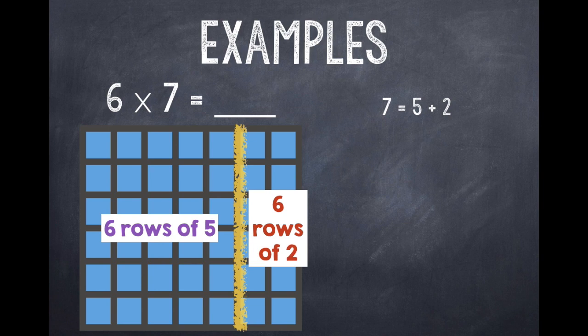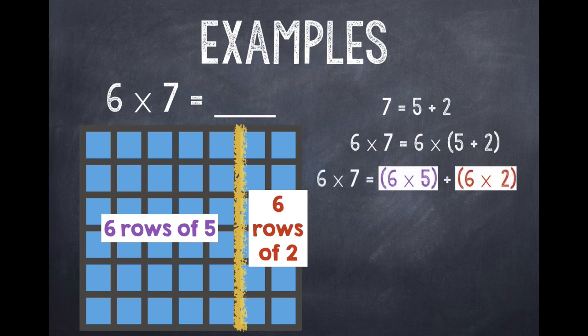And I can rewrite my equation as 6 × 7 = 6 × (5 + 2). And I'm putting that parentheses around 5 + 2 because that's what I'm going to use in place of the 7. Then I'm going to distribute my 6. I'm going to take that 6 and I'm going to multiply it by both numbers inside the parentheses. So 6 × 7 is the same as 6 × 5 + 6 × 2. And the parentheses tell me that I should do that part first. So my 6 rows of 5, I wrote as 6 × 5. And my 6 rows of 2, I wrote as 6 × 2.